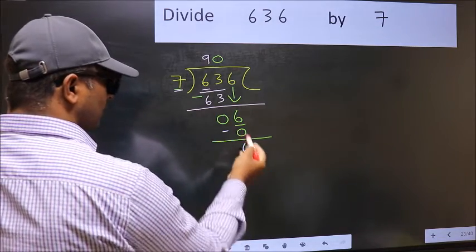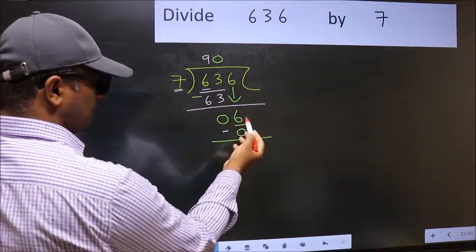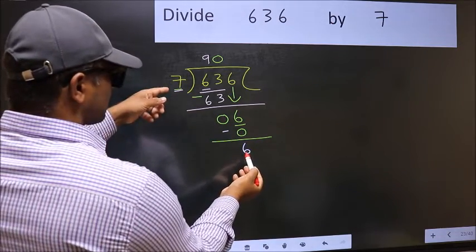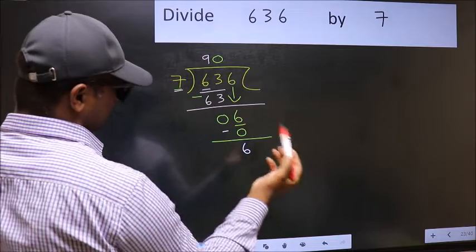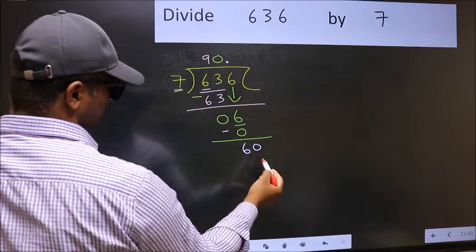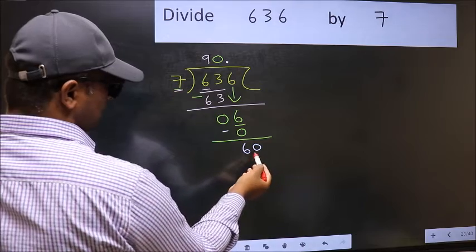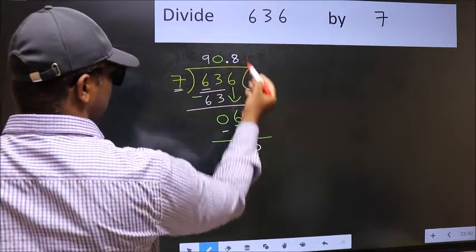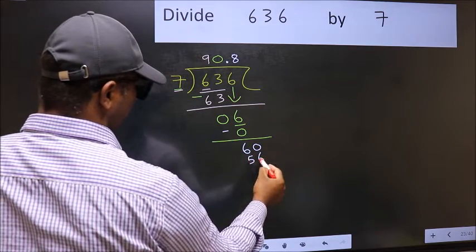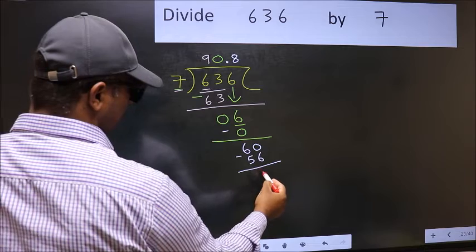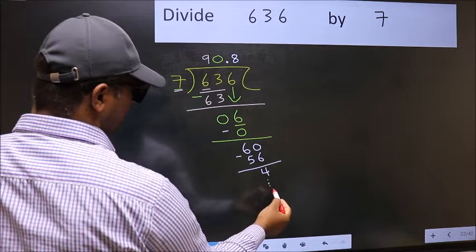Over here we did not bring any number down. And 6 is smaller than 7. So now you can put dot and take 0. So 60. A number close to 60 in 7 table is 7 8's 56. Now you should subtract. 60 minus 56, 4. And continue the division. I am not doing that.